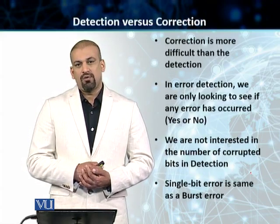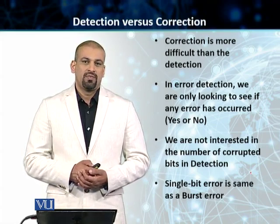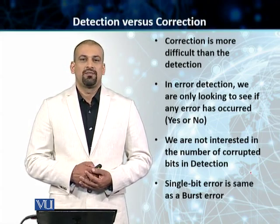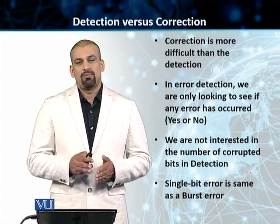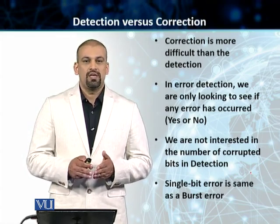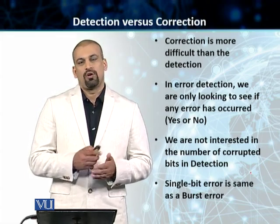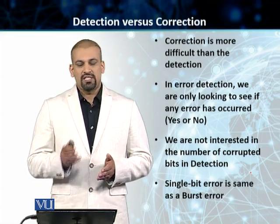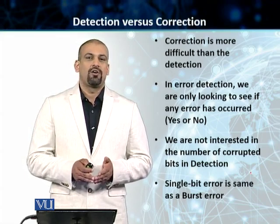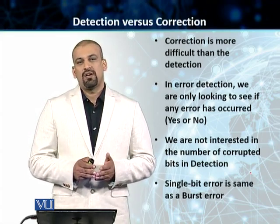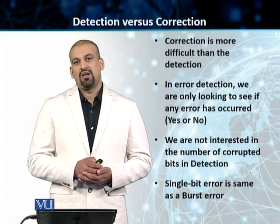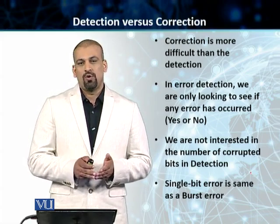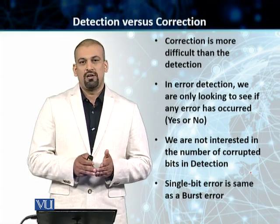The next topic is a little bit about error detection versus error correction. Error detection is simple; error correction is complex. In the process of error detection, all that you need to know is whether an error has occurred or not. You need to find a mechanism that at the receiving end can tell you if an error has occurred. We are not concerned with how many bits are impacted, which bits are impacted, or the location of the error — all we need is a yes or no.